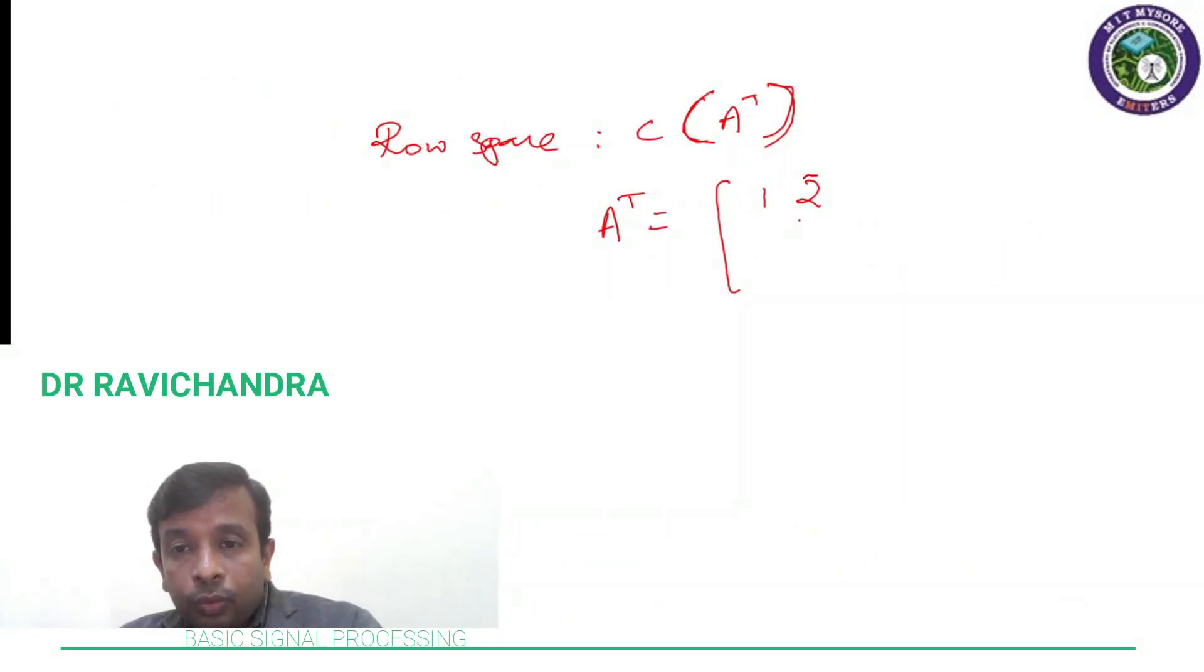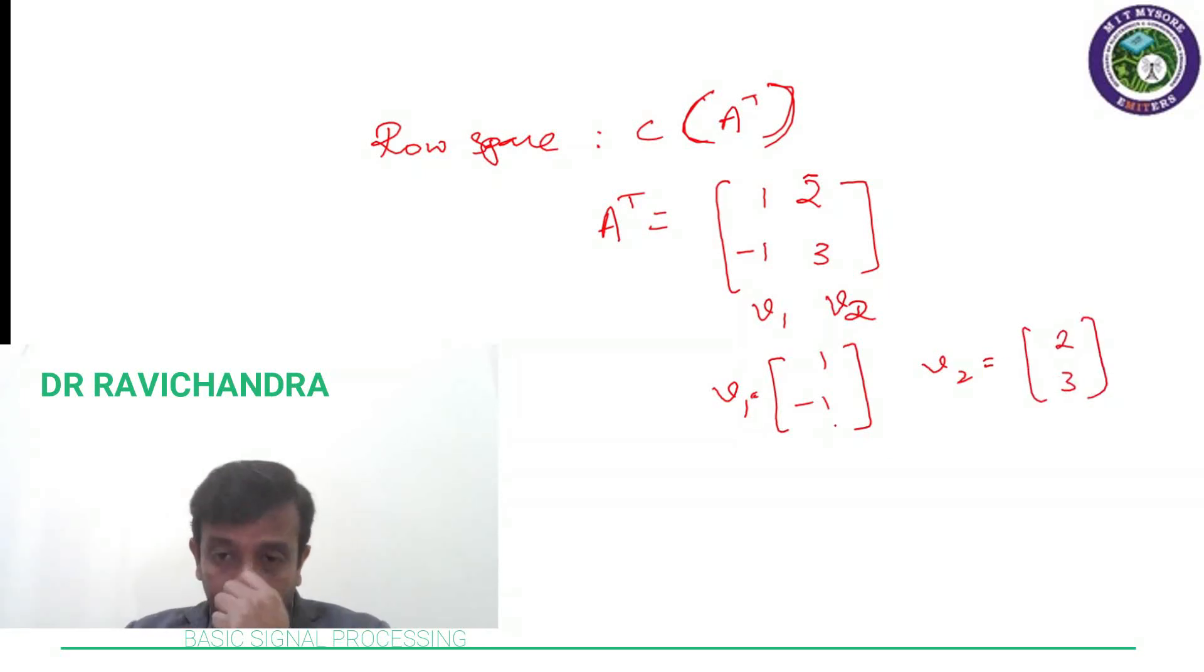Now if I go ahead and talk about the row space. Row space that we defined it as column space of A transpose. And if I have to write A transpose, then it is 1, 1, 2 and minus 1, 3, right? And the column vectors would be V1 and V2. So here you see that V1 is 1 minus 1 and V2 as 2, 3. So these together constitute the row space of A.